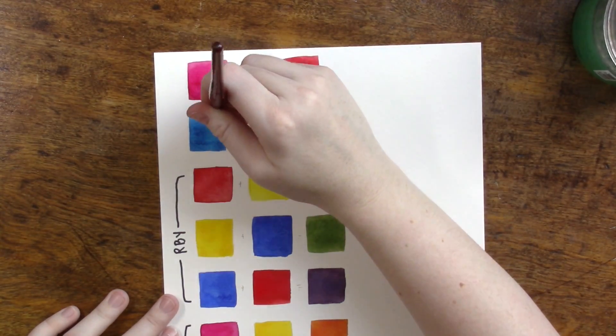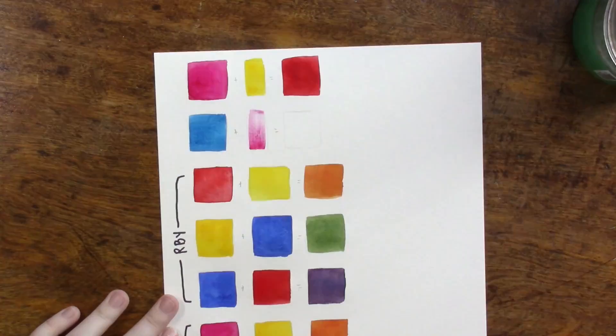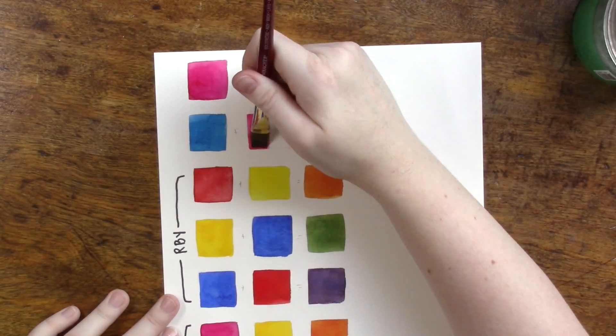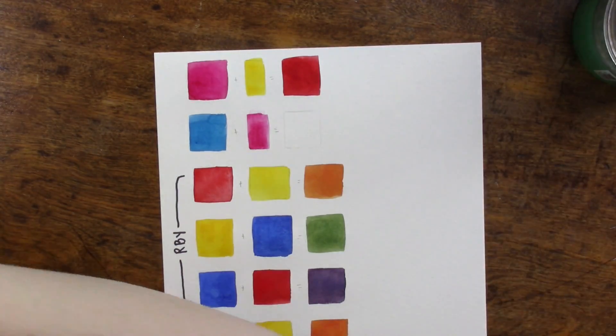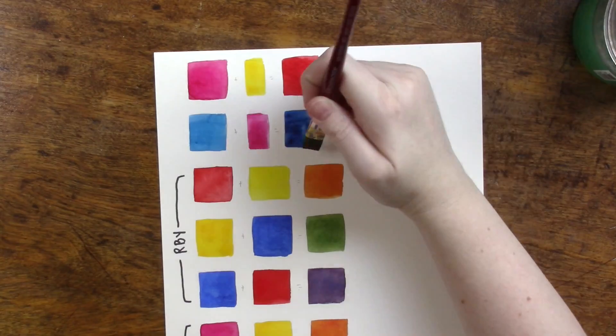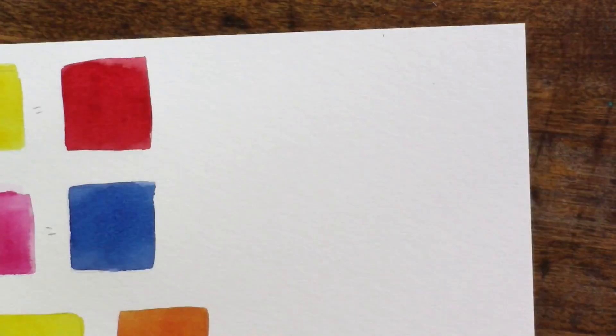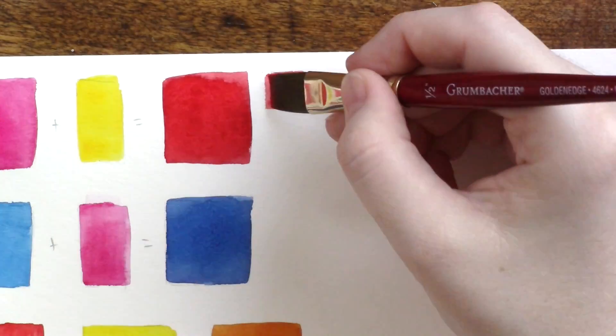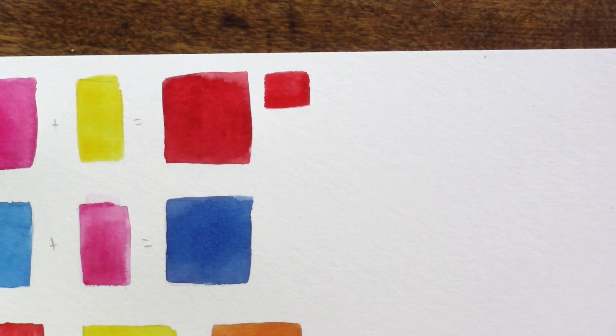I can also do something similar with the Phthalo blue and mixing in a tiny bit of the magenta to get a more, again quote-unquote, 'primary blue' that we would think of when we're mixing colors with markers or crayons in grade school. Next to them I've put swatches of pure pigment straight from the tube so you can see the comparison.